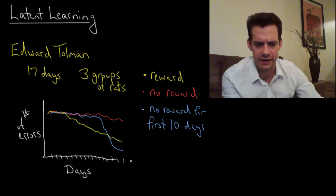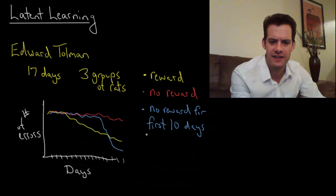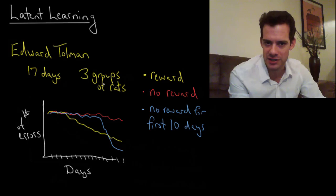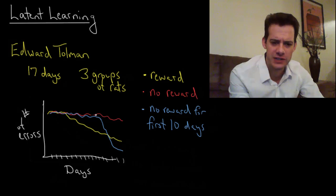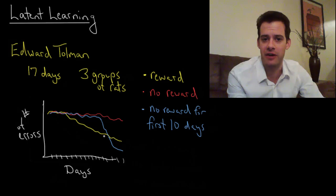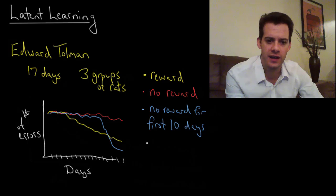So what does this mean? This demonstrates that this third group of rats throughout this 10-day process were actually learning. They just didn't have a reason to demonstrate that learning. But when you suddenly start putting a reward into the maze they start getting to it very quickly. That shows they actually have been learning something about the maze all along. This is the idea of latent learning.